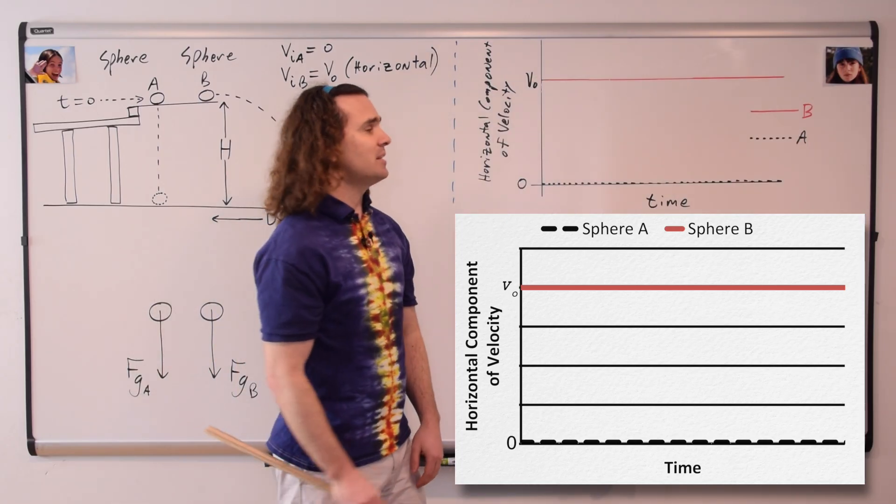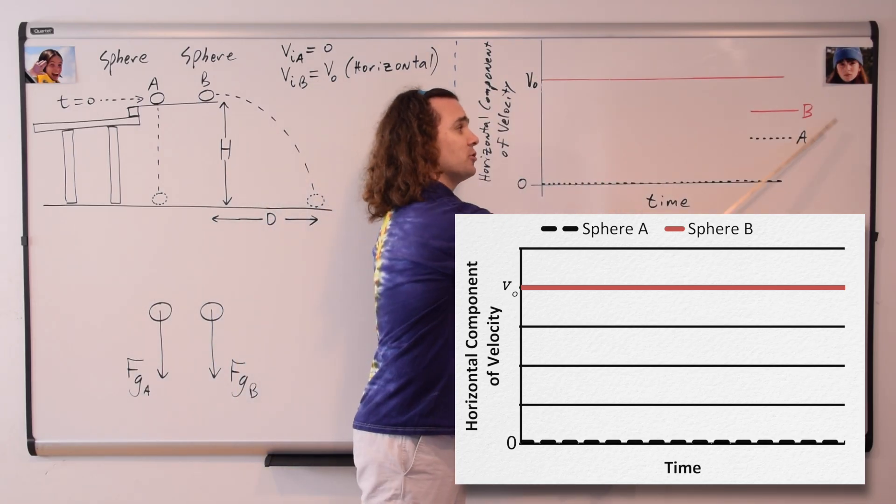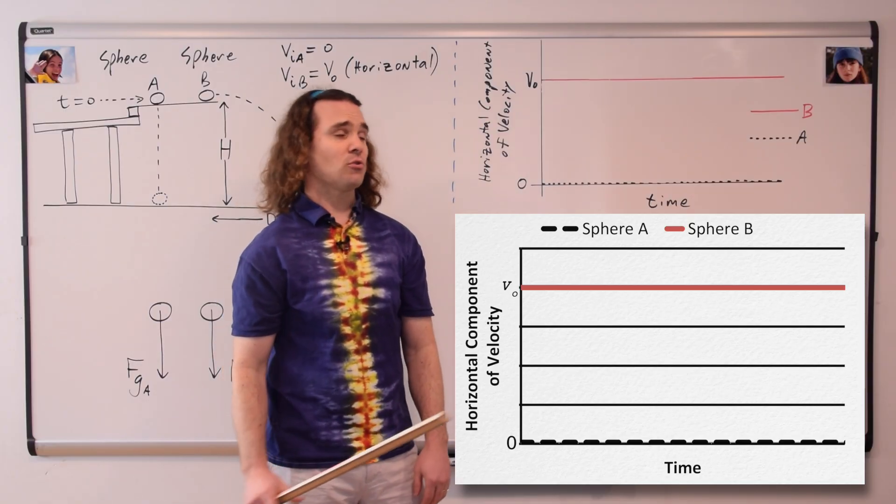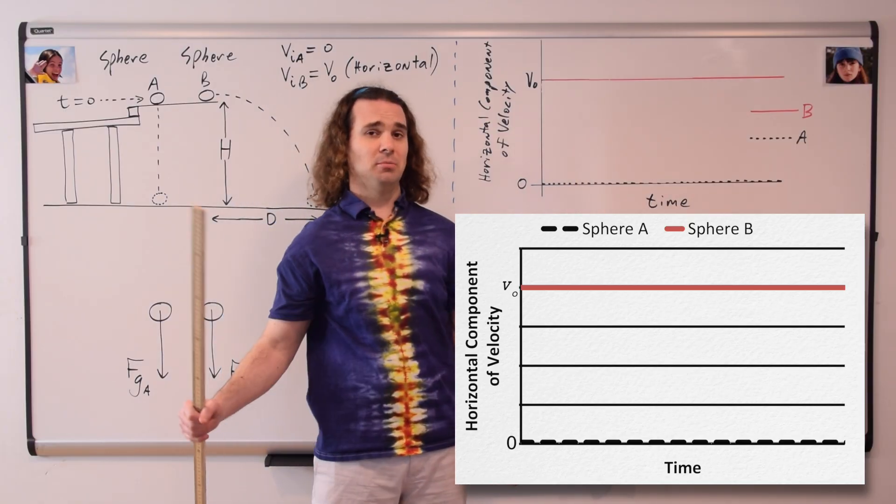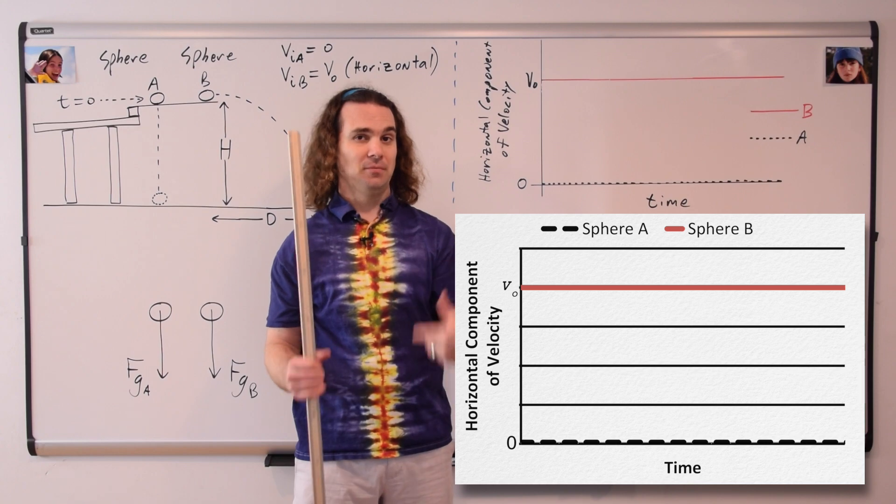Remember to clearly identify which line goes with which sphere, I have used a legend, and in order to make straight lines straight, please use a straight edge. Bobby, please read part C.